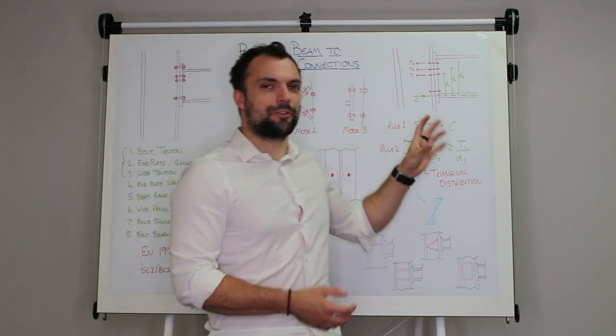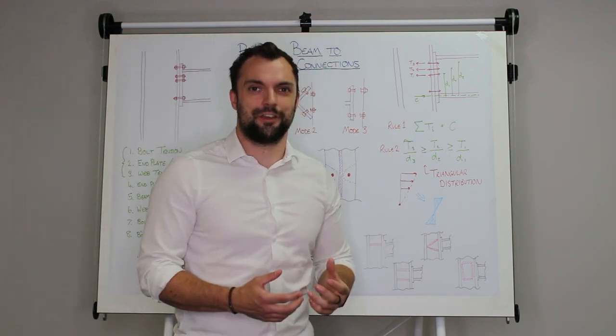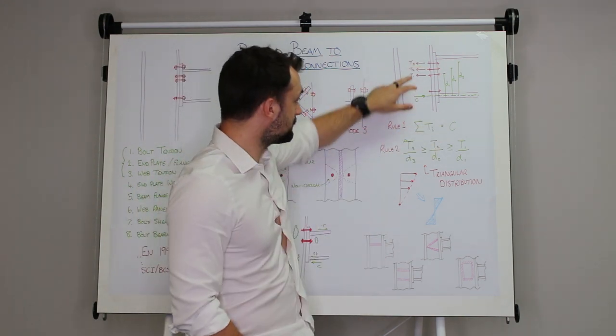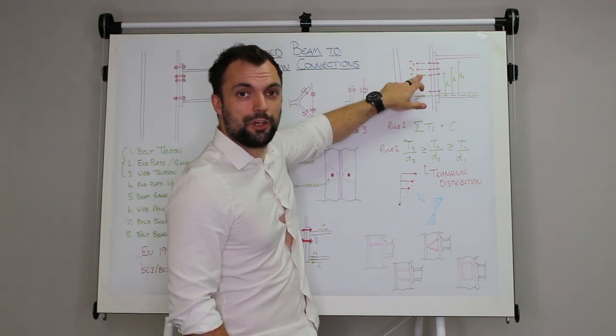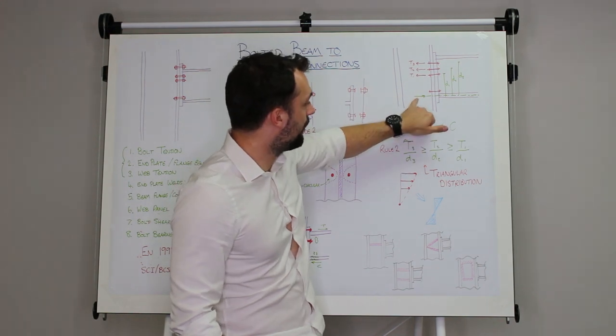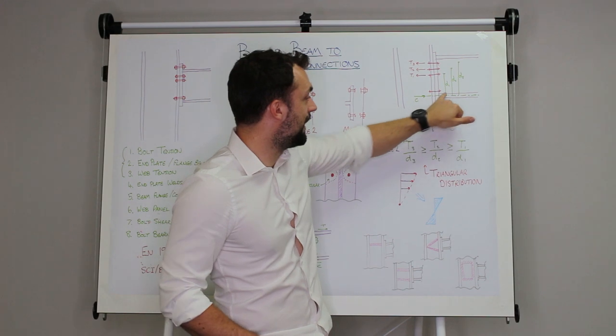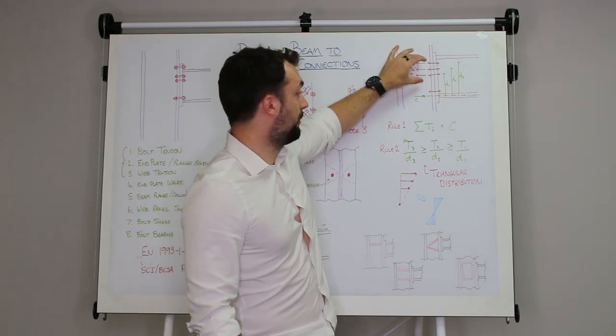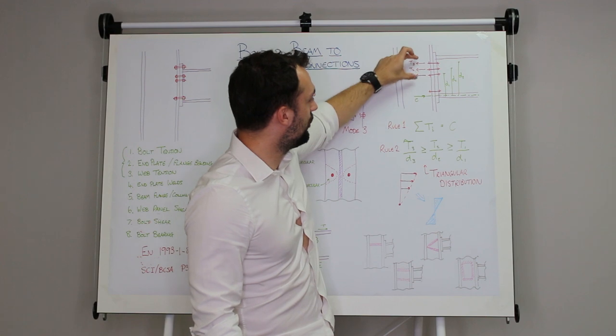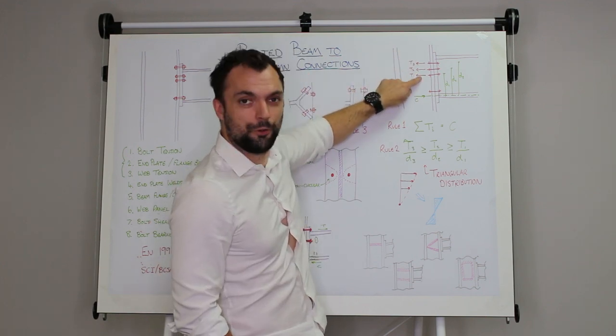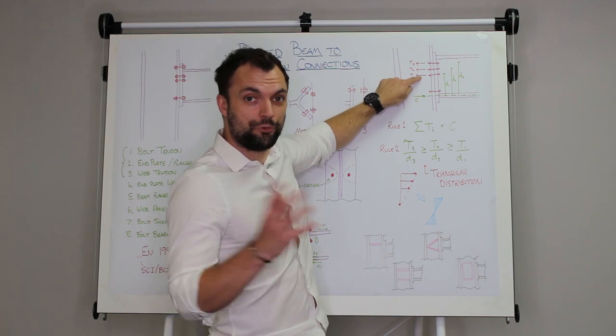Now the way you design it is quite generous to you in that any reductions that you have to make - for example if these ones couldn't quite get the full tension, or if your compression, that you've designed the compression resistance of this flange or this web, is actually smaller than some of the bolts - you will have to reduce the resistance of these bolts. But it lets you reduce the first one as the bottom bolt, and once you've got rid of that resistance you'll have to start reducing the second bolt.